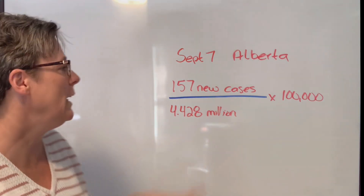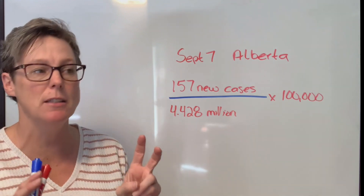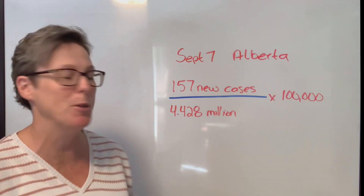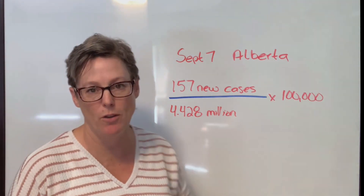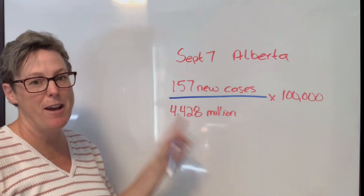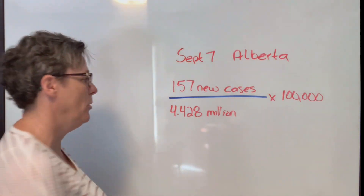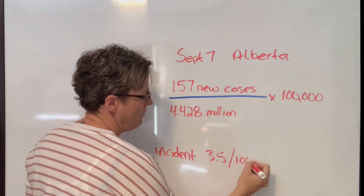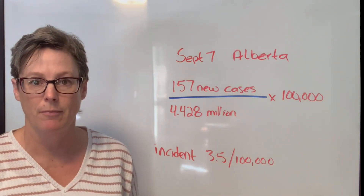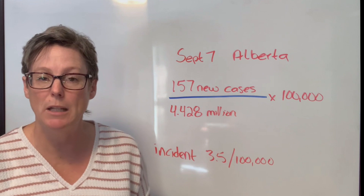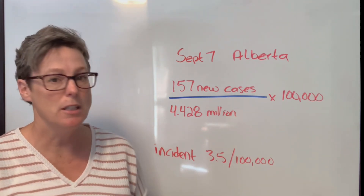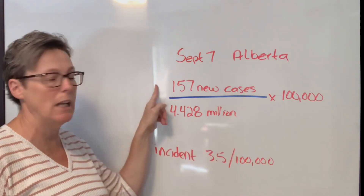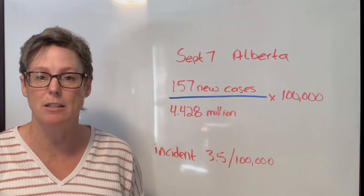On September 7th, Alberta had 157 new cases — that's the new cases figure for incidence. The total at-risk population in Alberta is 4.428 million people. When we break it down to per 100,000: 157 divided by 4.428 million, multiplied by 100,000, gives an incidence rate of 3.5 people per every 100,000 in the province. Being selective about the area you're choosing and knowing how many new cases there are tells you the risk level of getting that illness.